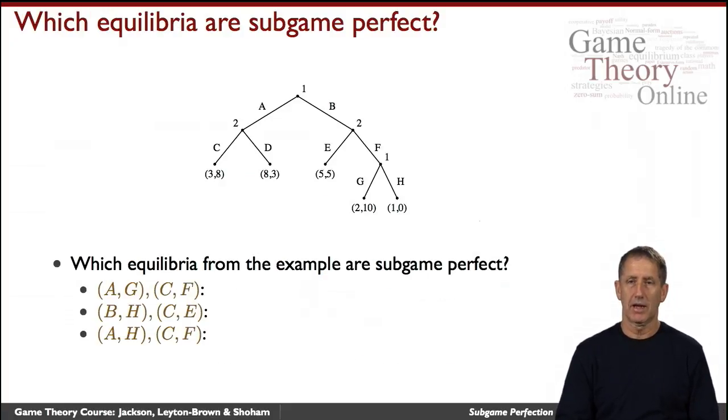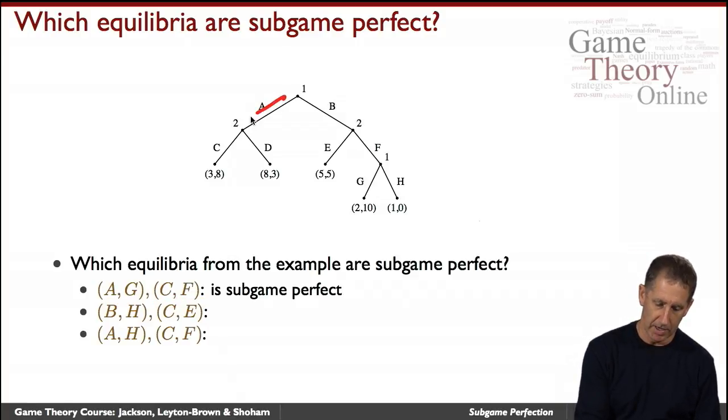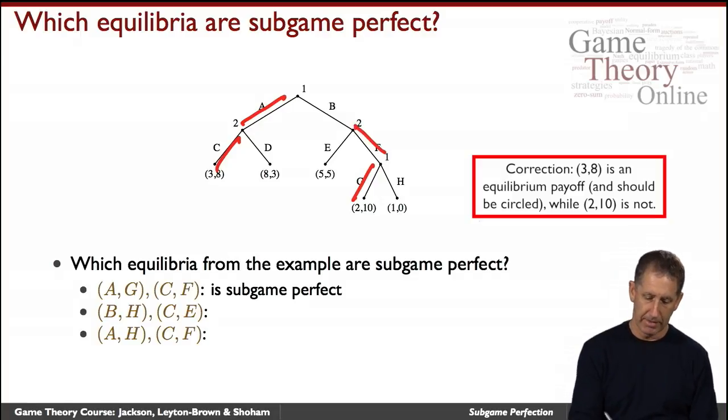Let's test our understanding of this concept. Let's look at this tree and ask ourselves what are some of the subgame perfect equilibria there? For example, how about A-G-C-F? Well, the claim is this is, in fact, subgame perfect. What is A-G-C-F? That gives you this outcome over here.